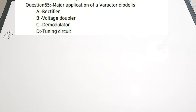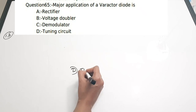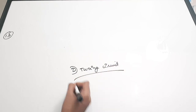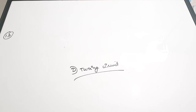Question 13: The major application of a varactor diode is — A) Rectifier, B) Voltage doubler, C) Demodulator, D) Tuning circuit. The varactor diode is most commonly used in a tuning circuit. In superheterodyne receivers and other types of receivers, the varactor diode can be used for tuning. Correct answer is option D, tuning circuit.